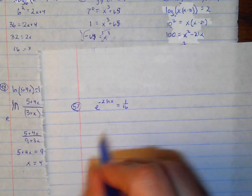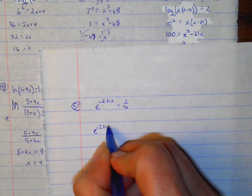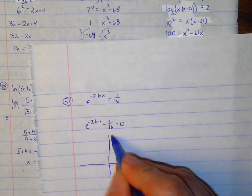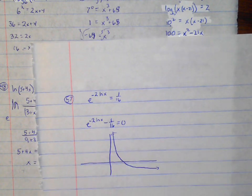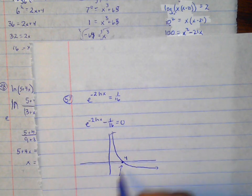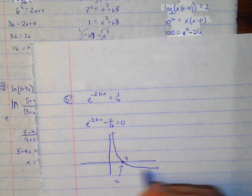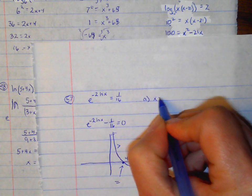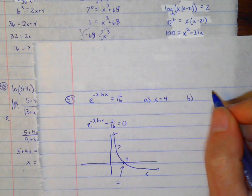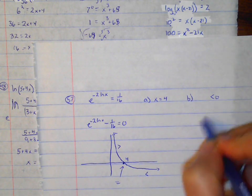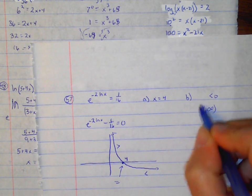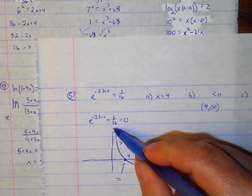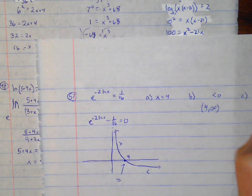Number 57: we're going to solve this graphically, setting it equal to 0 and graphing. The solution is x equals 4, where it crosses the x-axis. Part A: x equals 4. Part B — where the equation is less than 0 — that would be from 4 through infinity. Part C — where it is greater than 0 — since there's an asymptote, the function doesn't start until 0, so the answer is from 0 to 4.